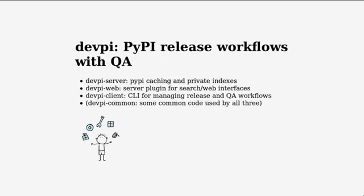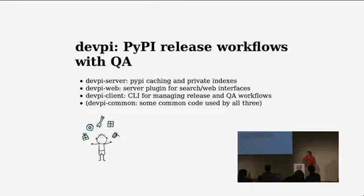The DevPI system is basically there to help you with PyPI-related release workflows and quality assurance. It currently consists in version 2.0 of three main components. The first is the core DevPI server, which provides the PyPI caching index and your private indexes, where you might not want to publish publicly but want to use within your organization.